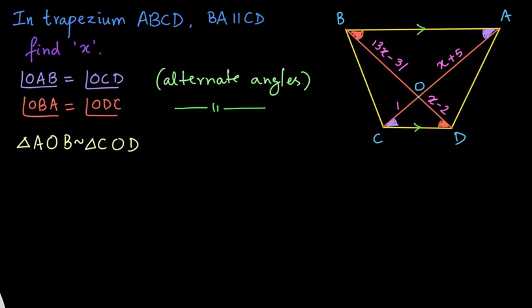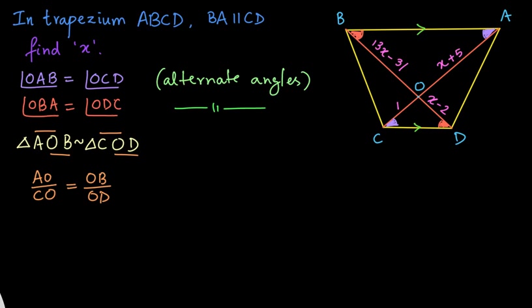Now we will take the ratio of the corresponding sides, because if two triangles are similar, the ratio of corresponding sides will be equal. So we can say that AO divided by CO is equal to OB divided by OD. From the figure, AO is X plus 5, CO is 1, OB is 13X minus 31, and OD is X minus 2.